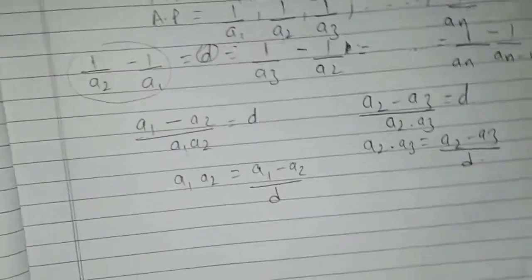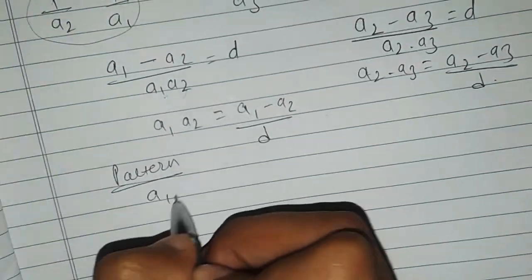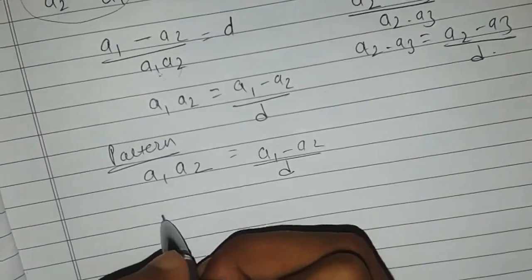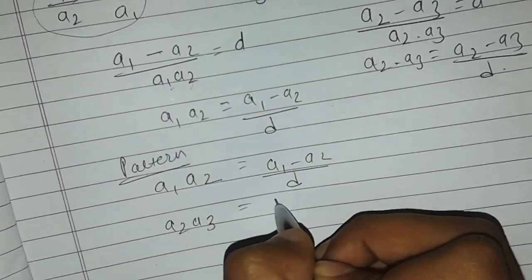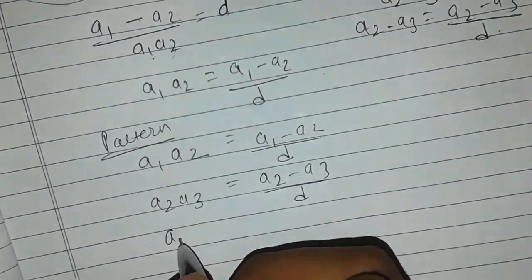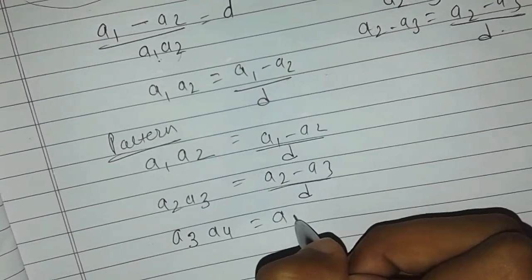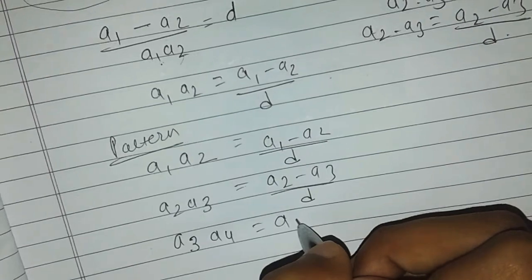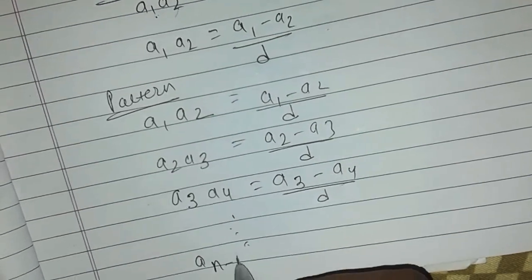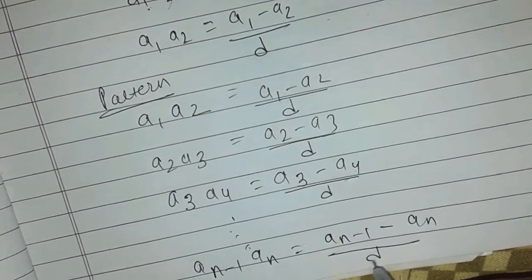Let us look at the pattern. We have a1·a2 = (a1 minus a2)/d, a2·a3 = (a2 minus a3)/d, a3·a4 = (a3 minus a4)/d, and going on like this, up to a(n-1)·an = (a(n-1) minus an)/d.